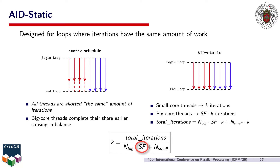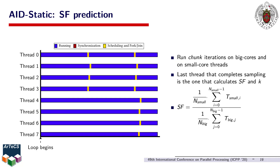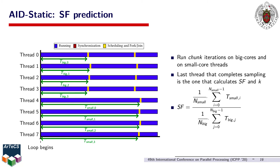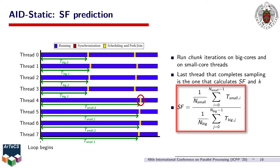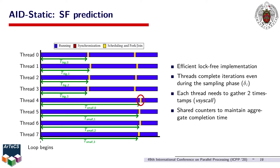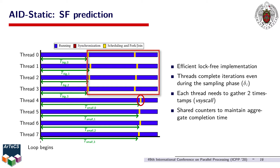AID-static determines the SF at runtime using a sampling method. The runtime system tracks the amount of time each thread takes to run the first chunk iterations of the loop assigned to them, where chunk is a configurable parameter whose default value is 1. The last thread to complete the chunk iterations, usually running on a small core, is the one that calculates SF and k. Specifically, the SF is calculated with the ratio of the average completion time registered on big and on small cores. We use the term sampling phase to refer to this method for predicting the speedup factor. The sampling phase is very efficient and has a lock-free implementation. Once a thread has completed the first chunk iterations, it will continue removing and executing additional iterations from the shared pool until all threads have completed the sampling phase, so useful work is still done during sampling.